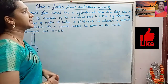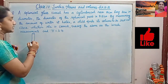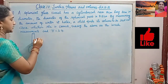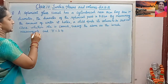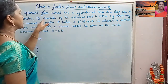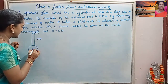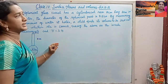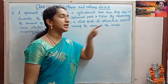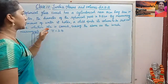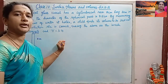A spherical glass vessel has a cylindrical neck 8 cm long and 2 cm in diameter. The diameter of the spherical part is 8.5 cm. By measuring the amount of water it holds, a child finds its volume to be 345 cm cube. Check whether she is correct, taking the above as the inside measurements and pi equal to 3.14.